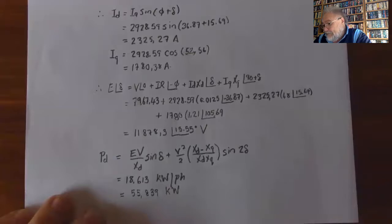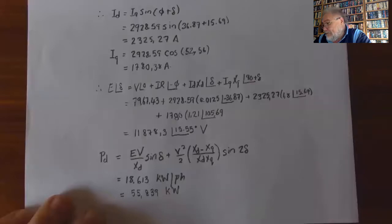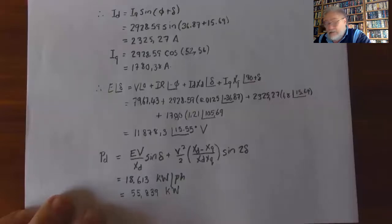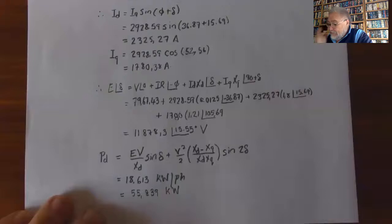The developed power is: P = EV/Xd · sin(δ) + V²/2 · (Xd − Xq)/(Xd·Xq) · sin(2δ), giving 18.613 kW per phase and a total of 55.839 kW.